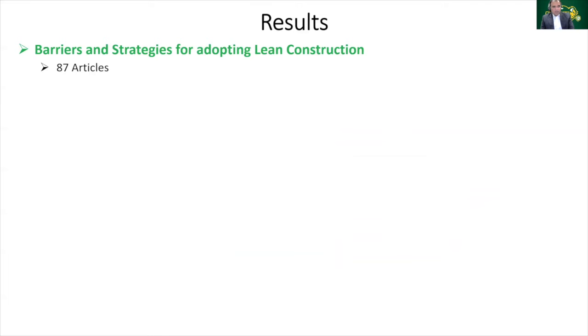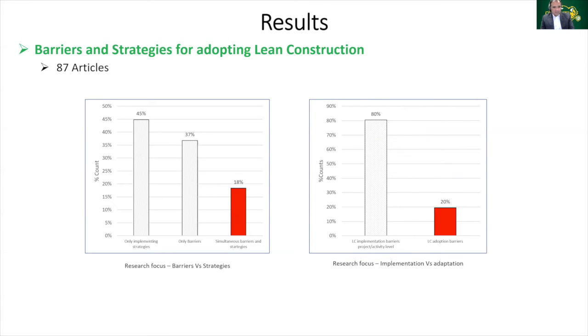Now, after going through 87 articles, it was established that most of the research in identifying the barriers and strategies are carried out in isolation. 82% of published papers have identified the barriers and implementation strategies separately, whereas only 18% of the articles presented both barriers and strategies simultaneously, but they were discussed separately.